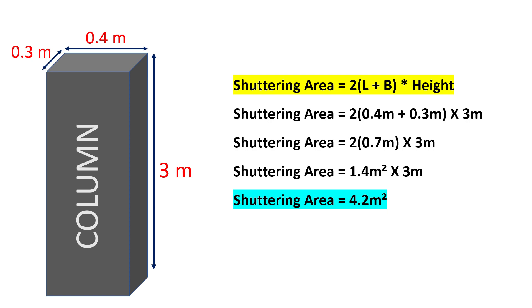Substituting these values, the shuttering area of the column will be calculated as 4.2 square meters. Now that we have the shuttering area of a single column, let's figure out the plywood requirement for shuttering work on 10 similar sized columns.